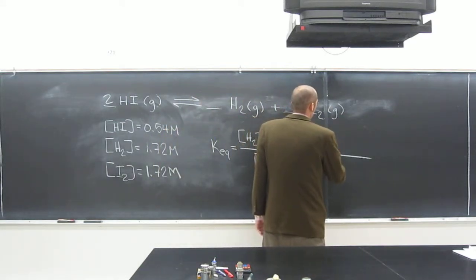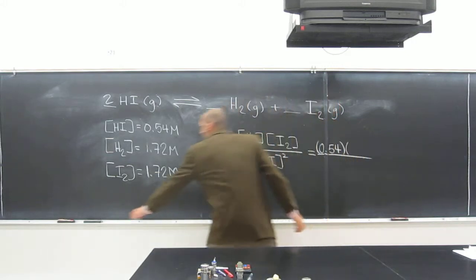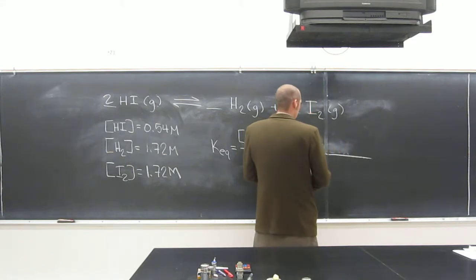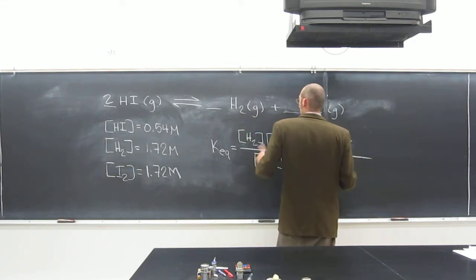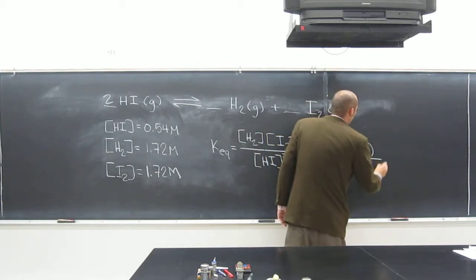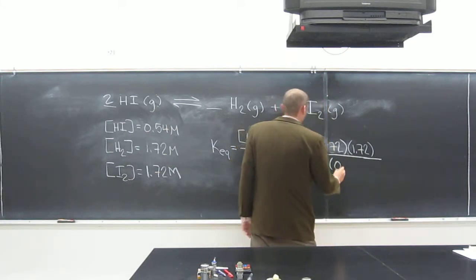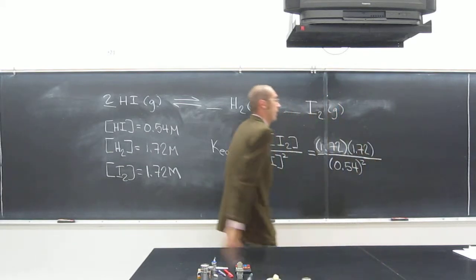So we say 0.54 times 1.72. 1.72 times 1.72, it's easier to see on a piece of paper than it is on the board. Divide it by 0.54 squared.